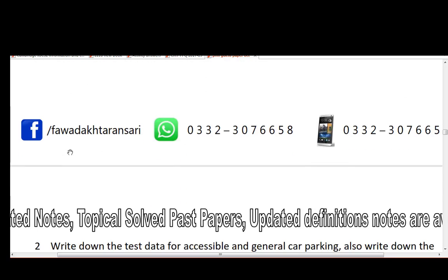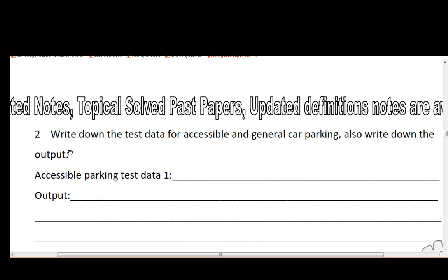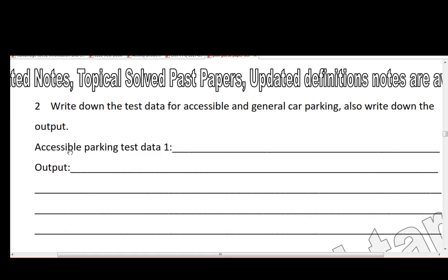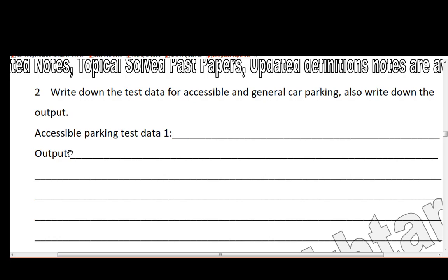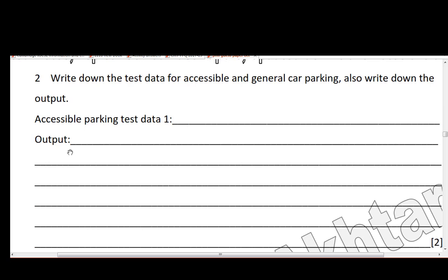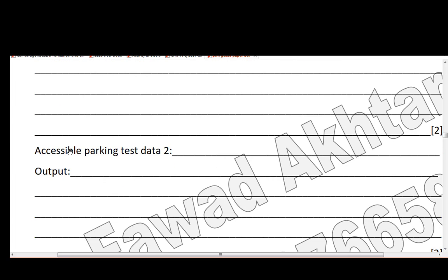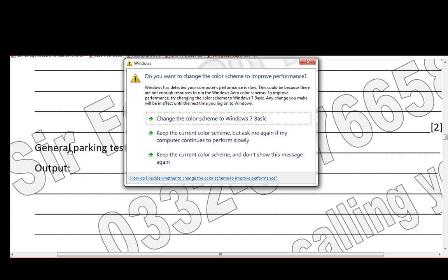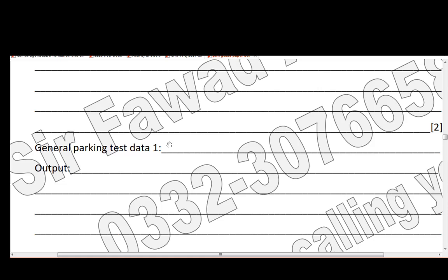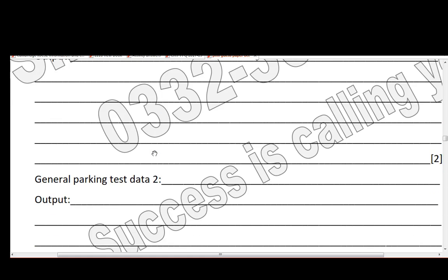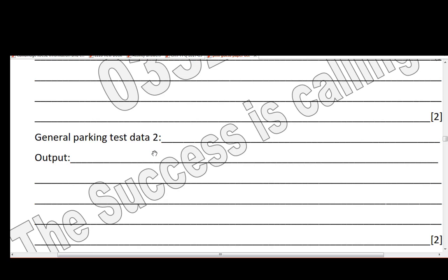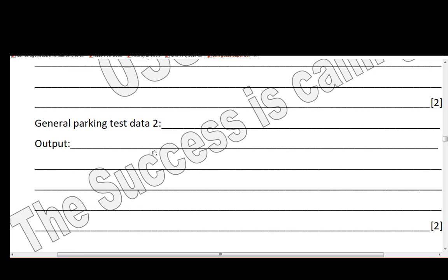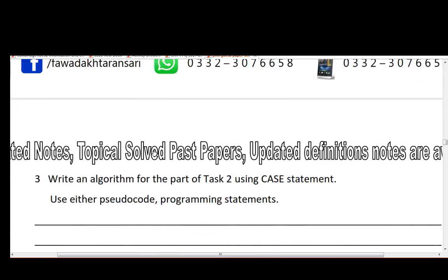Question 2: write down the test data for accessible and general car parking. Type test data 1 for accessible parking, give the expected output, then type test data 2 and show the expected output. Do the same for general parking test data 1 and test data 2, along with their expected outputs.